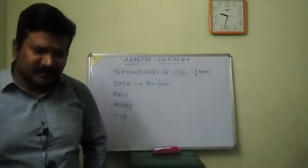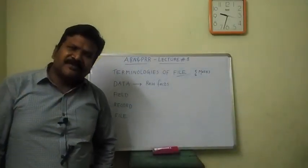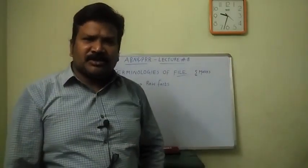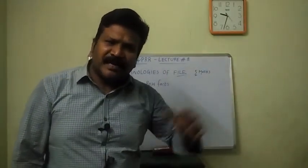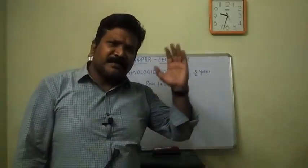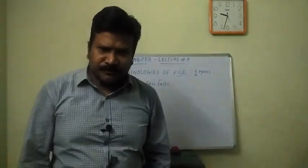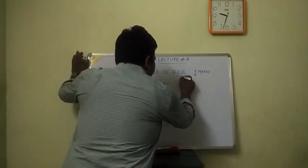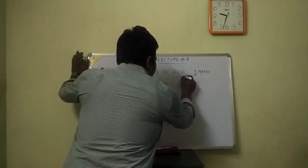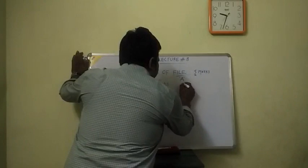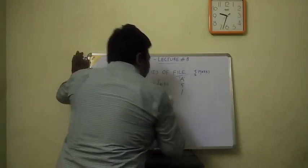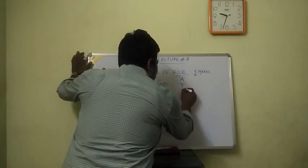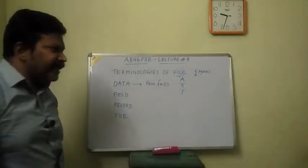Data can be in different forms. Data can be alphabetic, numerical, or in special symbols. For example, capital A is alphabetic data, five is numerical data, and forward slash is a special character. So data can be in different forms — alphabetic, numerical, and special characters.